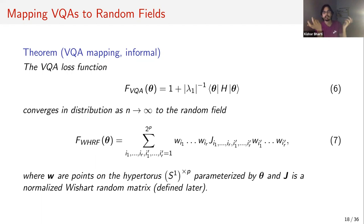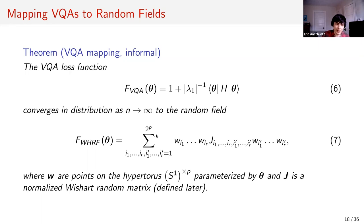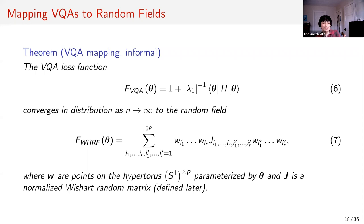In the machine learning case, parameters live on an S^(P-1) sphere where P is the number of parameters. Here, parameters live on S^1 to the P — the P-torus — where P is again the number of parameters. They end up being the same dimension if you look at both as mathematical models.